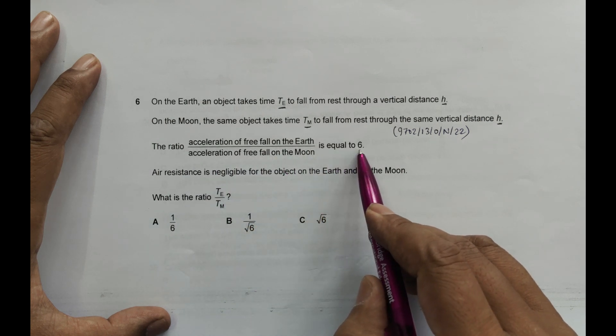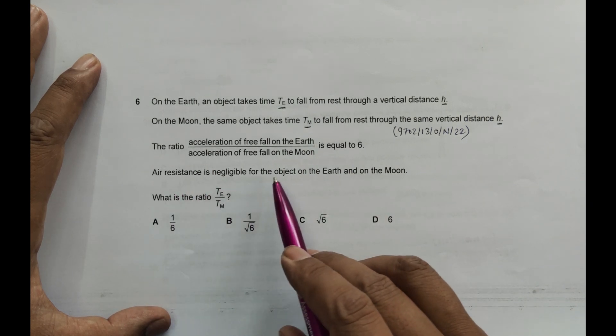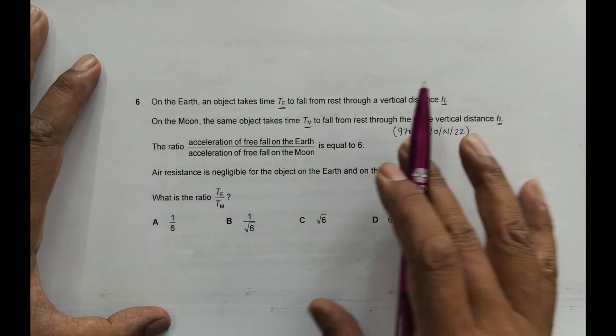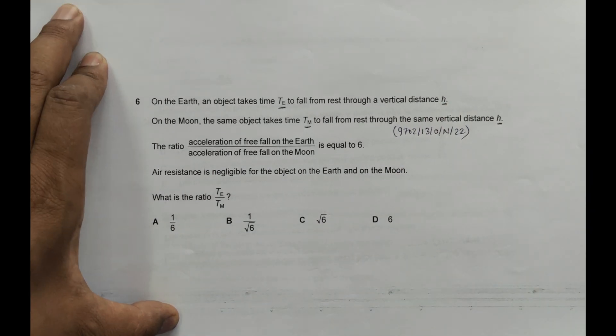Air resistance is negligible for the object on the Earth and Moon. So in both cases, air resistance is negligible. What's the ratio of Te by Tm?